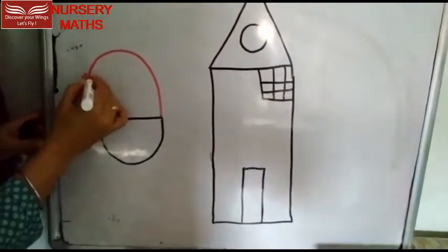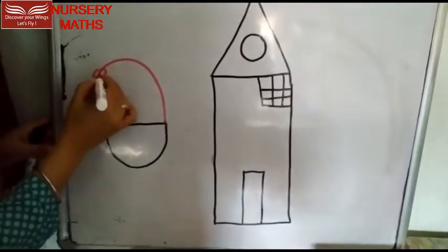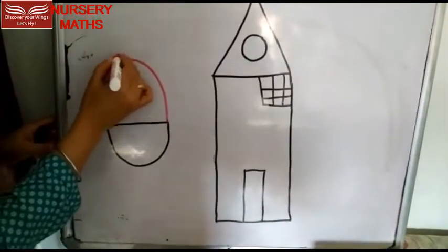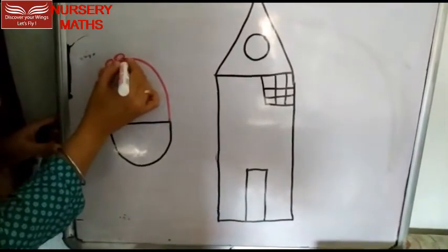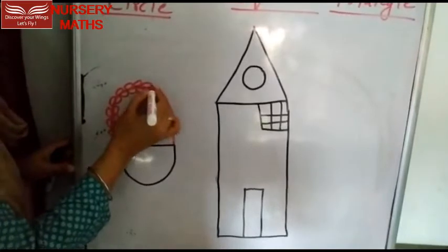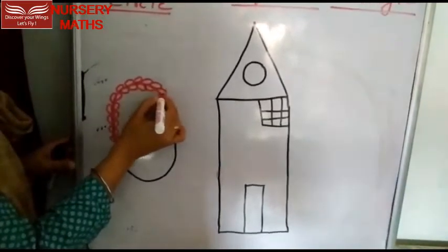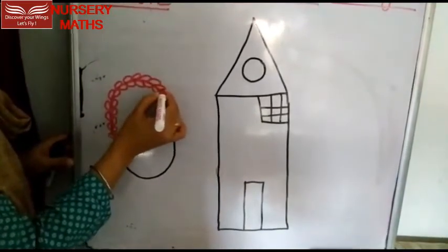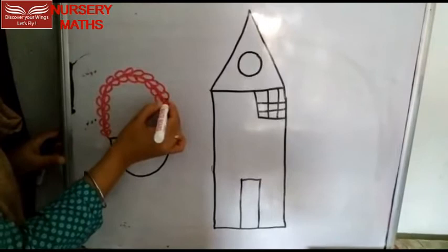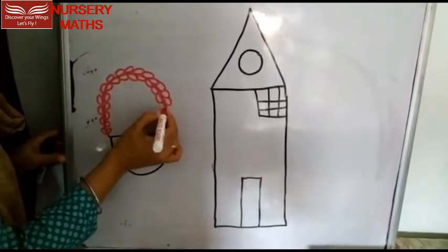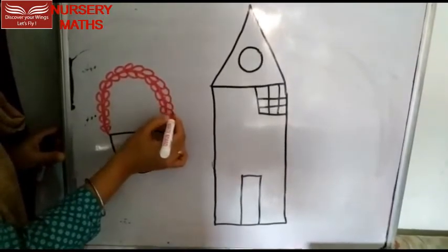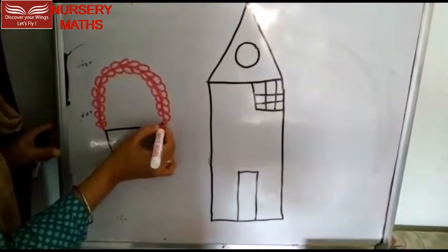We are going to use different things with this basket. What do you do with this basket? We can put a flask, eggs, vegetables, fruits - we can put many things in this basket.